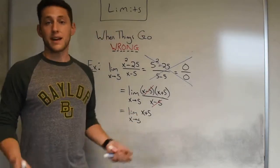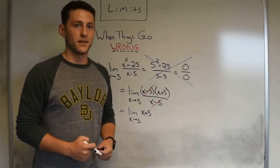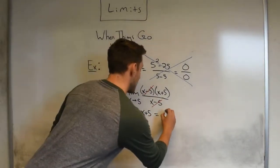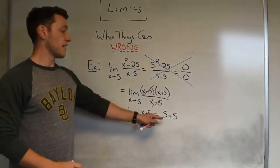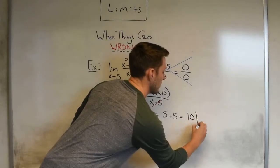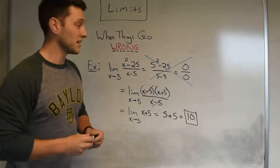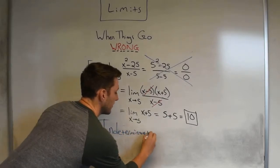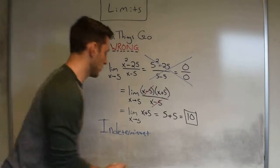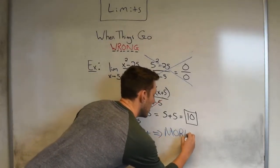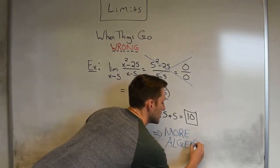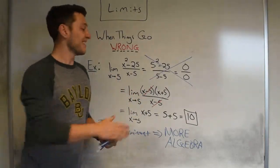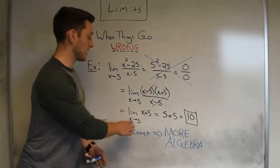Now it's just a polynomial, so we know how to proceed: revert back to rule number one and just plug in the number. The limit is x plus 5 evaluated at 5, which is 5 plus 5, giving us a final answer of 10. The important thing to note: if you ever run into an indeterminate form, it just means one thing — more algebra required. Don't stop at an indeterminate form; do some algebra, cancel some things, and land on your final answer by plugging things in once you get stuff canceled out.